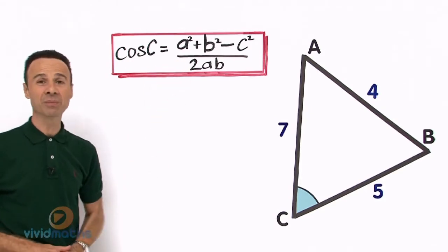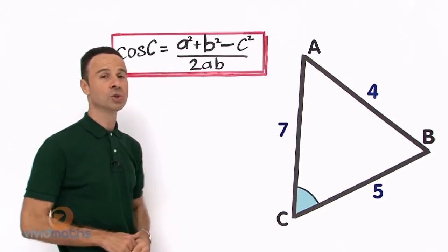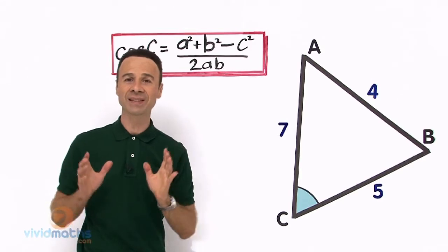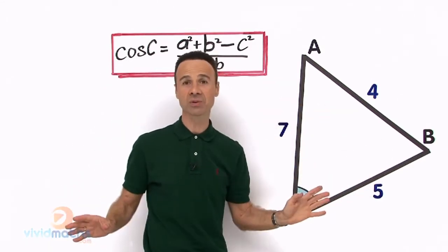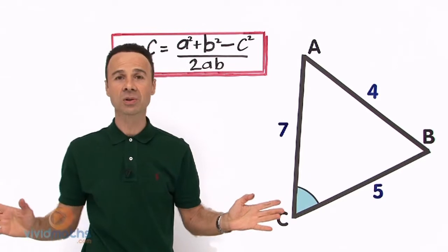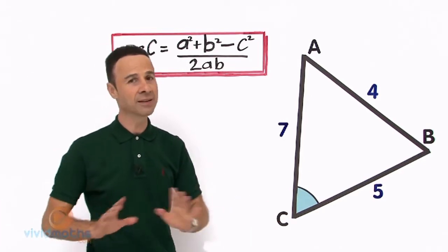Now it is fantastic news to get 3 sides, no angles, because there is no other rule you can use. The only tool you can use, the only technique, is cosine rule.